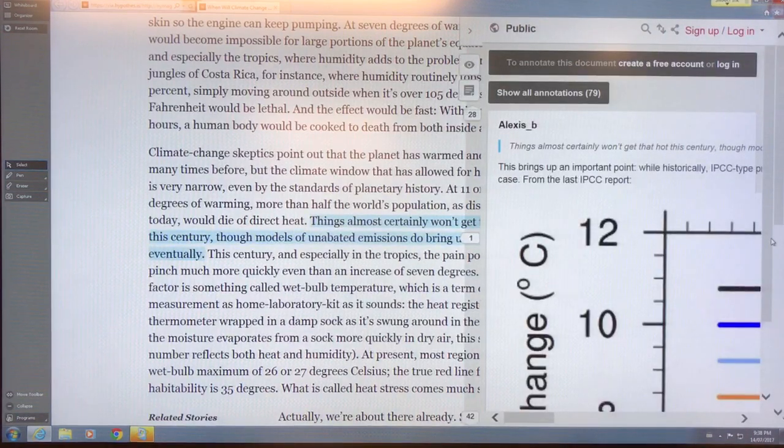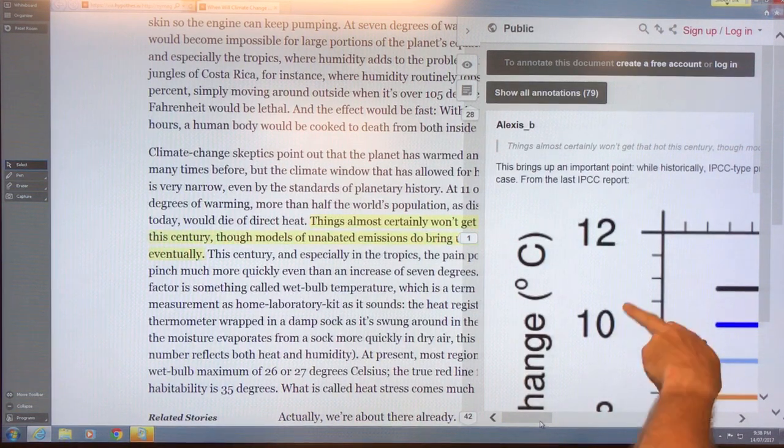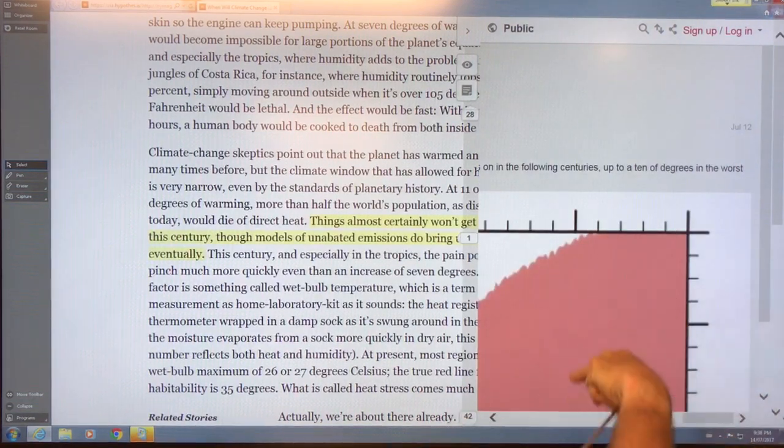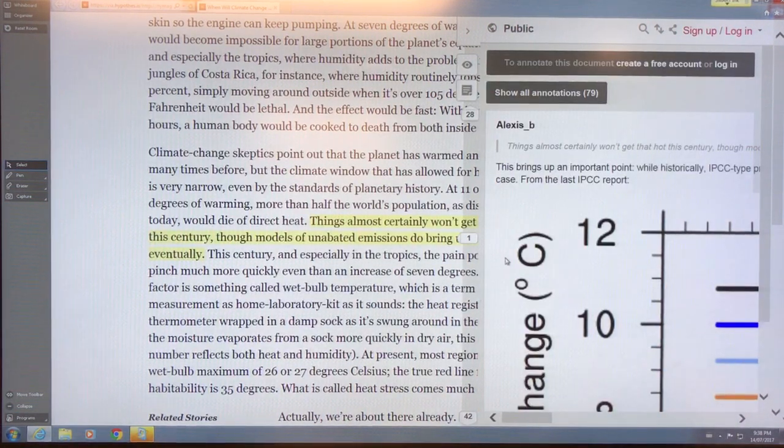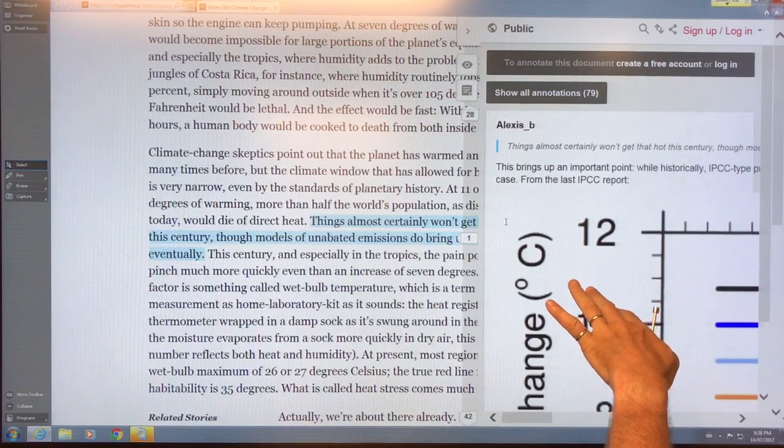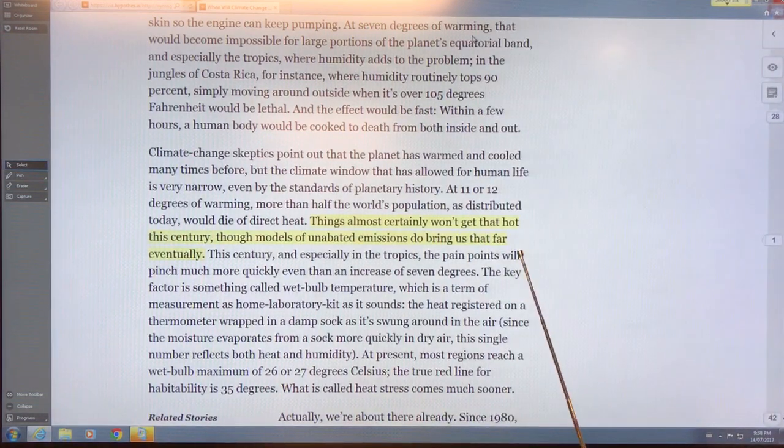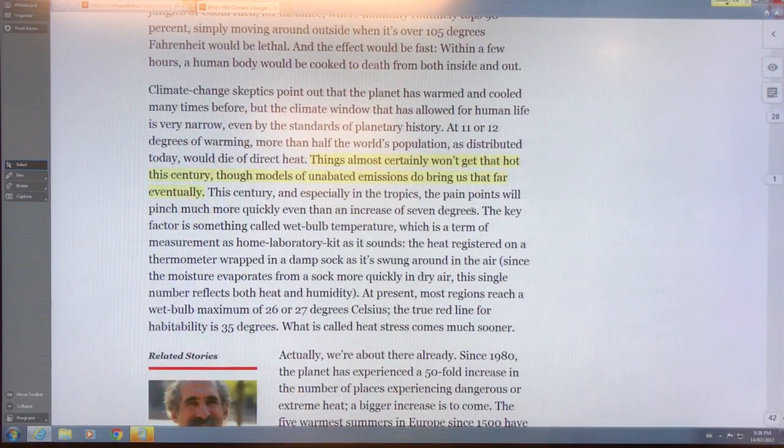11 to 12 degrees, and this is an article, I'm not, it's too large to see, but basically it goes up to 12 degrees Celsius. If you go look at the curves, you can look at this yourself. This person is saying that, yes, basically agreeing to that statement about the temperature. Things certainly won't get there this century, 11 or 12 degrees of warming, at which half the world's population would die of direct heat. These are horrifying things. Talks about wet bulb temperature.